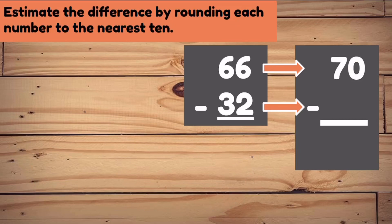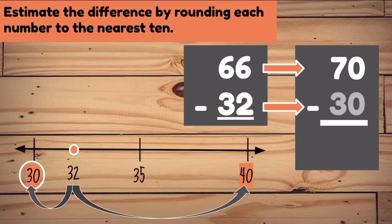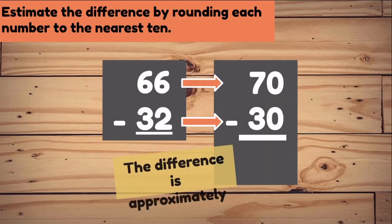32 is surrounded by two 10s, 30 and 40. Is 32 closer to 30 or 40? 32 is closer to 30, so 32 rounds to 30. Let's go ahead and subtract. 70 take away 30 is 40. So the difference is approximately 40.